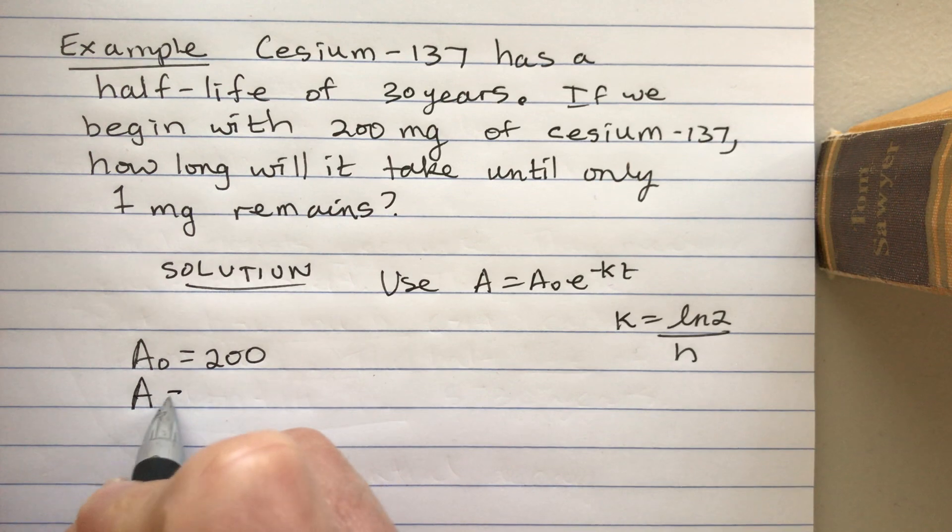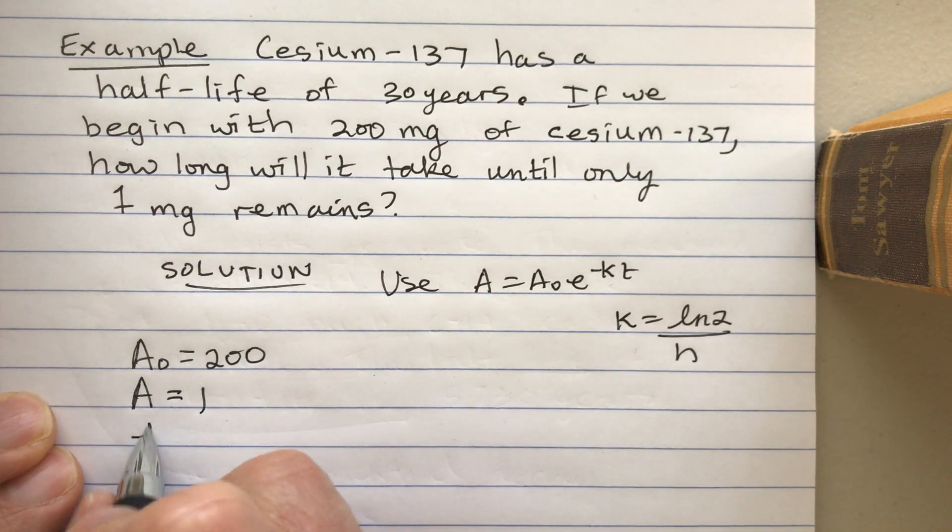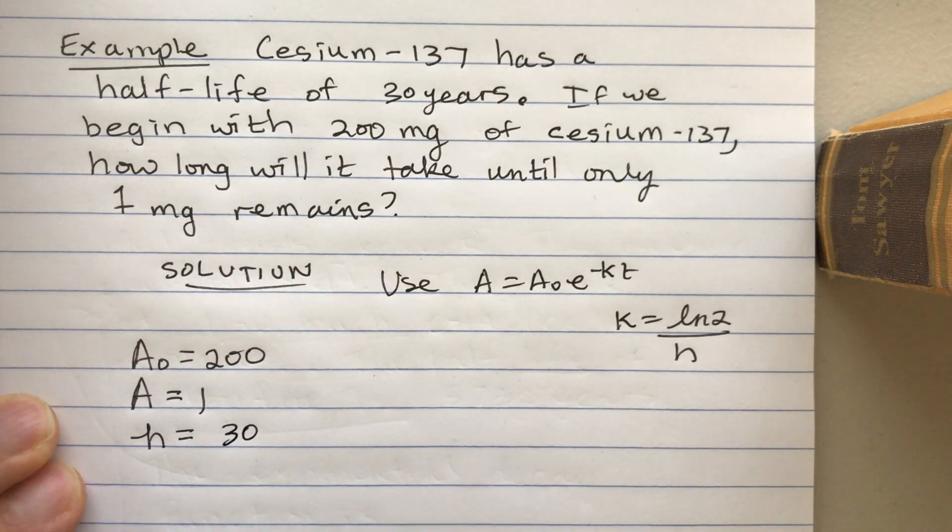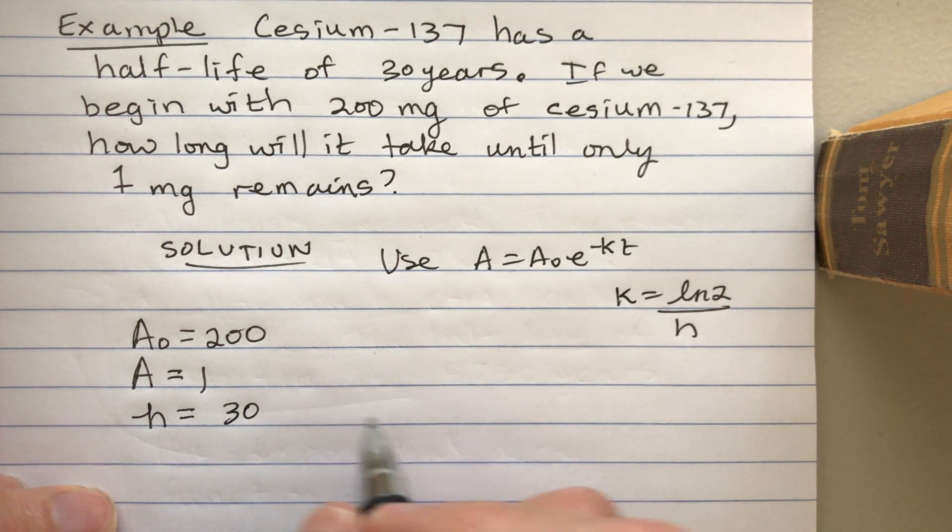We remain at one—that's what's going to remain. h is the half-life and that's 30. I imagine that's an approximation. So we just put everything in there.